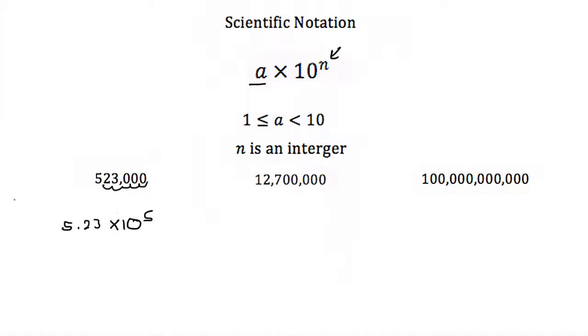So how did I come up with that? Well 10 to the 5th power is equal to 100,000, and if I take 523,000 and I divide it by 100,000 I get 5.23, but then I just multiply that 100,000 back on as 10 to the fifth.